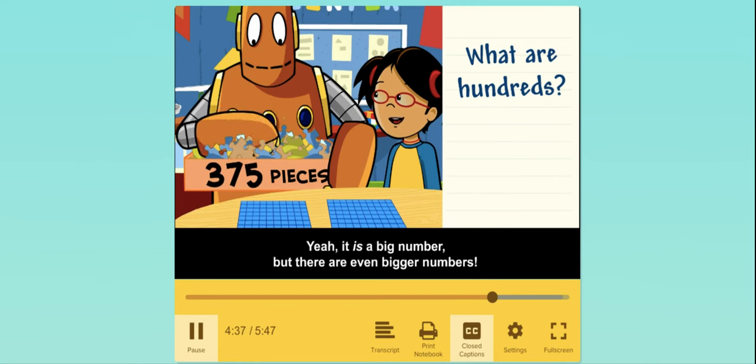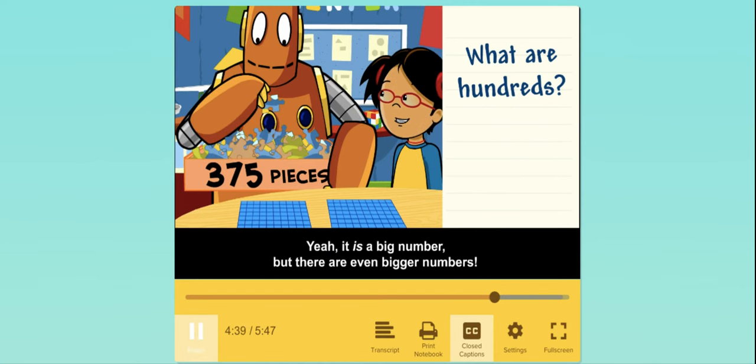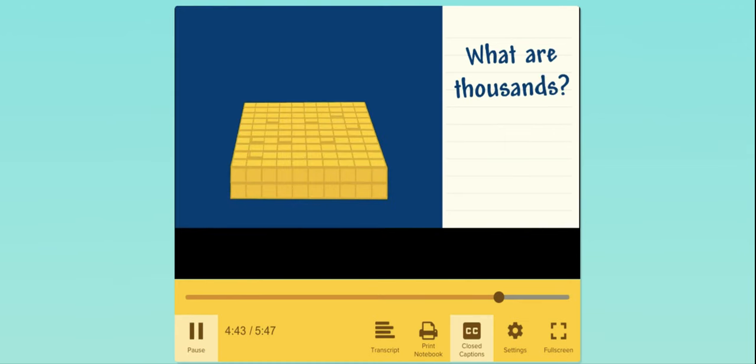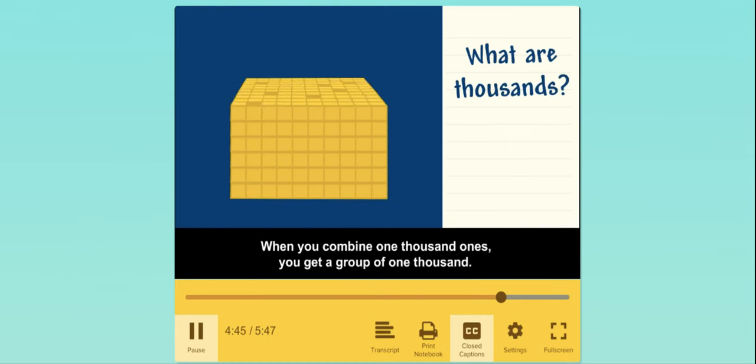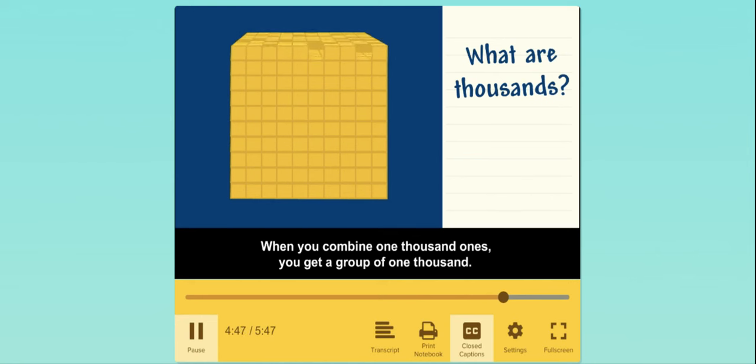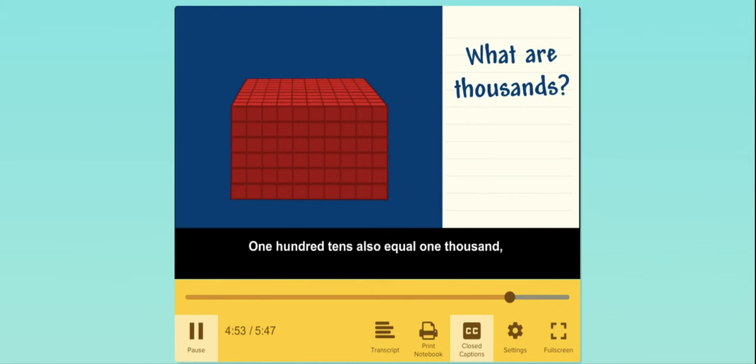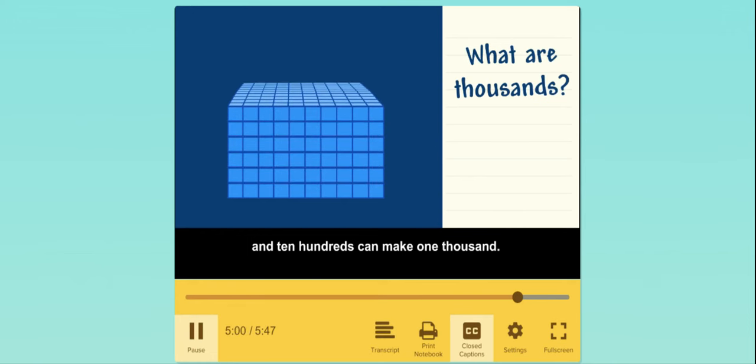But there are even bigger numbers. What are thousands? When you combine 1,000 ones, you get a group of 1,000. One hundred tens also equal 1,000. And ten hundreds can make 1,000.